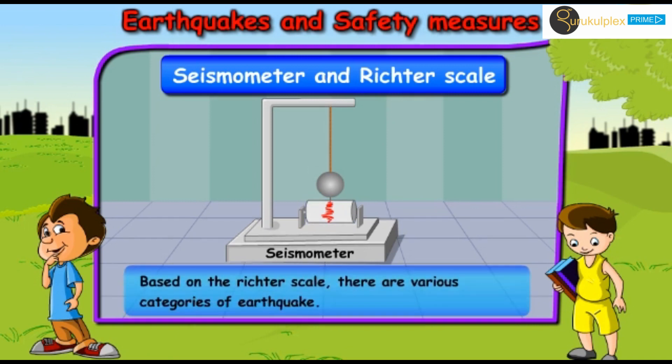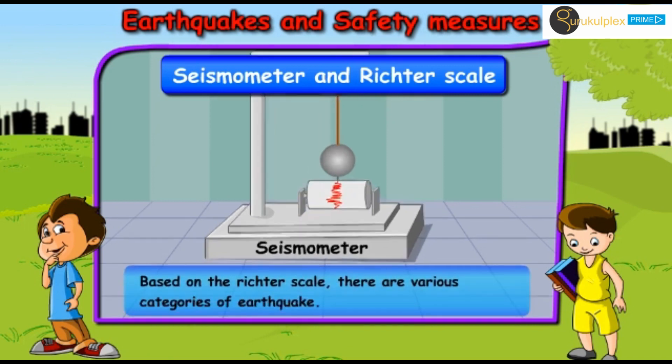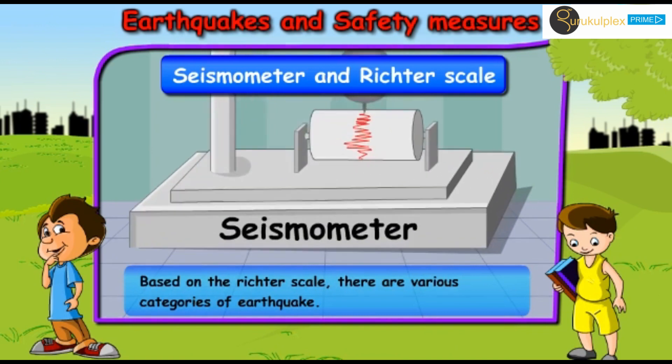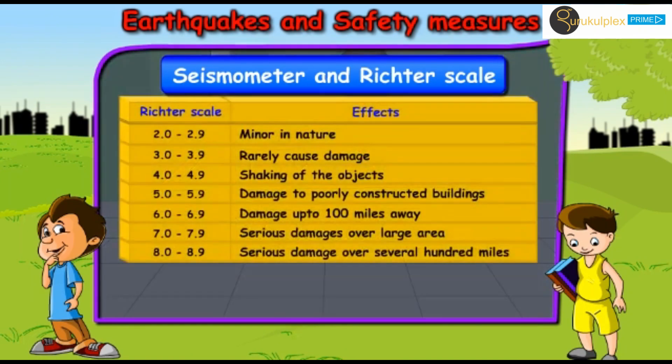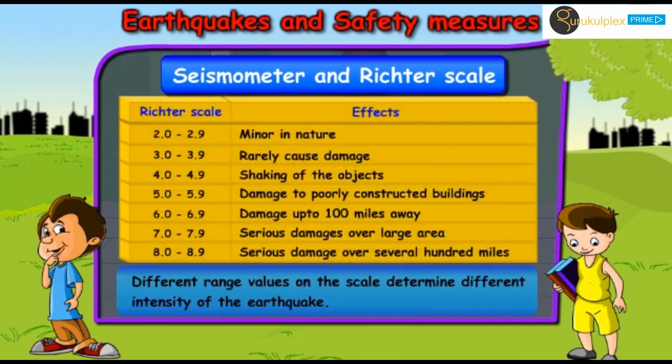The effects of an earthquake are measured on a scale called the Richter scale. Based on the Richter scale, there are various categories of earthquake, and different range values on the scale determine different intensities.